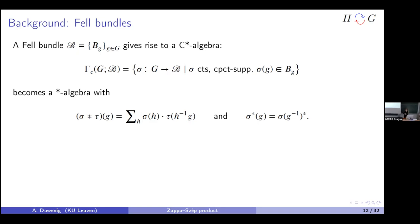We take sections — continuous compactly supported functions where point g lands in the fiber over g — and give this space a convolution product and an involution. The convolution formula sums over g, and the involution inverts the element and applies the bundle involution. We complete this to get a C*-algebra, denoted C*(B). As with crossed products, there is more than one completion — full and reduced — but I'll always use the full one.